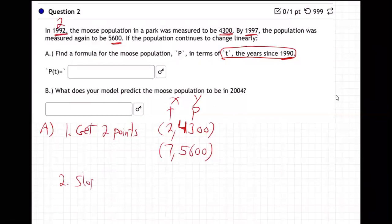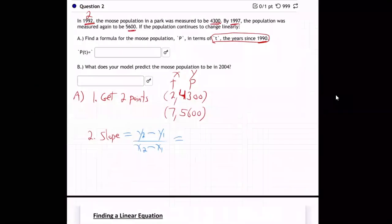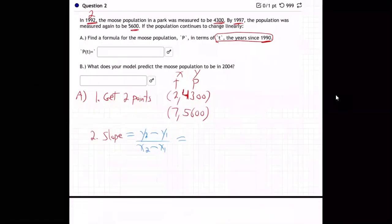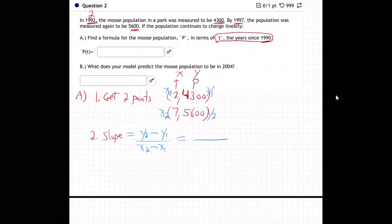Number two, find the slope. You know the slope formula. Y2 minus Y1 over X2 minus X1. So we go, okay, here's my X1, Y1, X2, Y2.